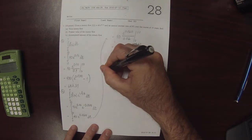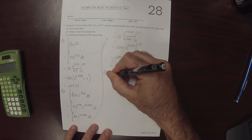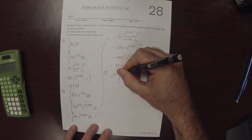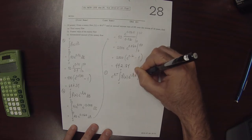So part C, the accumulated value, the formula is exponential r big T, integral 0 to big T, f of little t exponential negative r little t, dt.